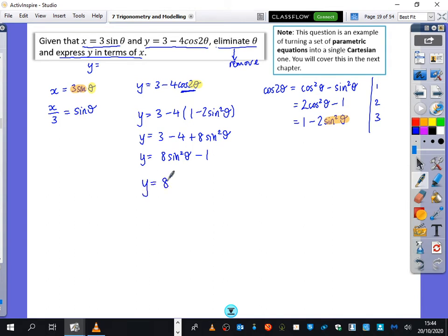Which means that y is going to be equal to 8 brackets x over 3 squared minus 1. And this is a Cartesian equation, because we have eliminated theta.